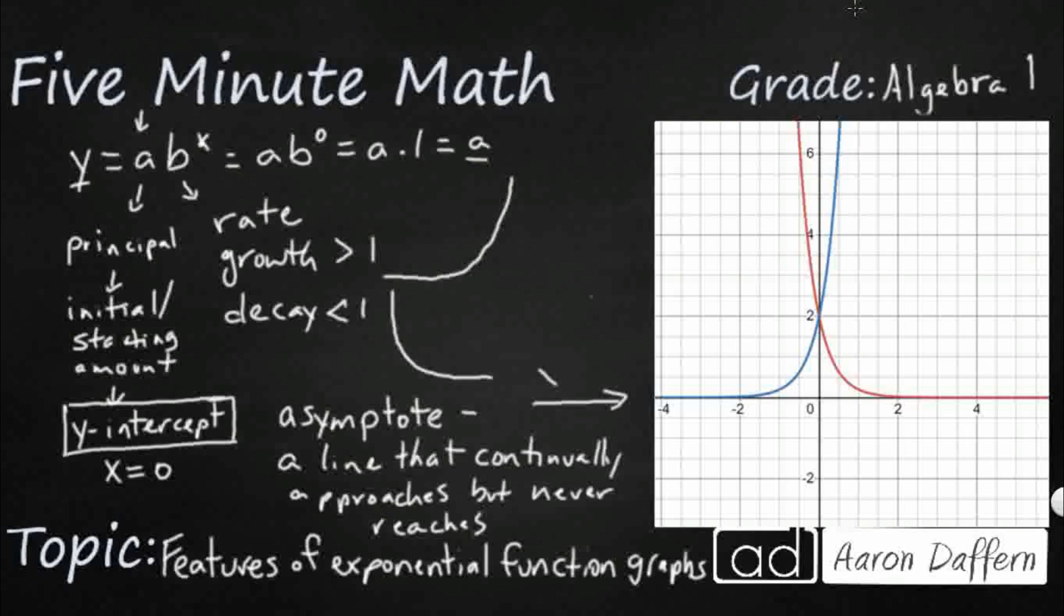But actually, that asymptote, that line of asymptote is going to be that x-axis right here. So that's going to be our y equals 0. It's going to be your asymptote. Because it looks like that is sitting right on there, but it's actually getting closer and closer and closer, but never really touching.